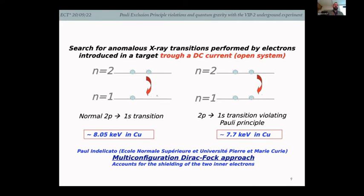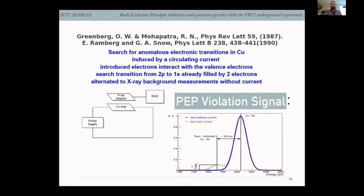Since there is an additional electron with respect to the classical transition, the shielding provided by that extra electron modifies the transition energy. So you would not find 8.05 keV as in the normal transition; instead this energy is shifted by some hundreds of eV, going to 7.7 keV.